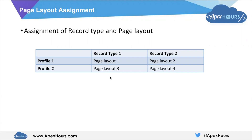In general, the purpose of creating record types and page layouts is to distinguish the fields visible on screens or values available in the picklist. Usually we create a different record type and a different page layout for each record type. This is not a hard rule, but it's a best practice - it allows us to create a scalable solution.